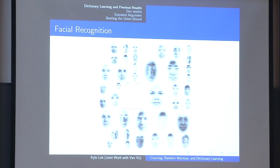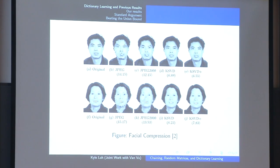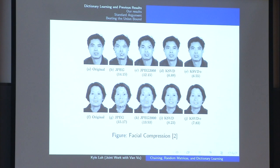One of the implications is facial compression. If I take your mug shot and represent it as a matrix recording every pixel, depending on the resolution that can be memory-intensive. The two faces on the left are the original high-resolution images, and everything to the right has been compressed to the same amount of memory. JPEG's compression algorithm makes these guys look like they just walked out of a video game, and even the more advanced one doesn't quite do them justice. But these two over here are generated from a dictionary learning algorithm. Intuitively, all I need to record are the coefficients of the sparse linear combination that generates each face.